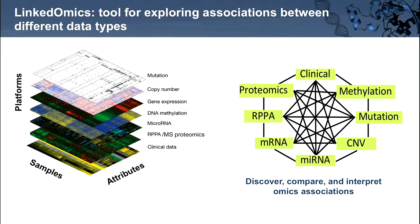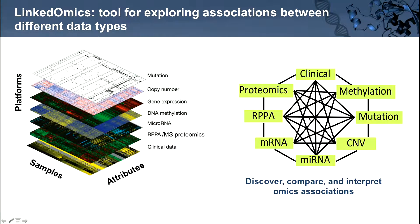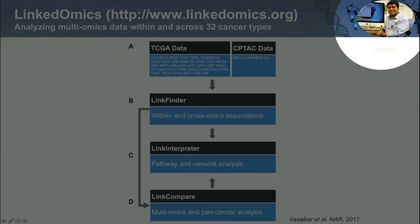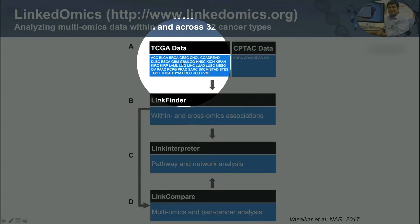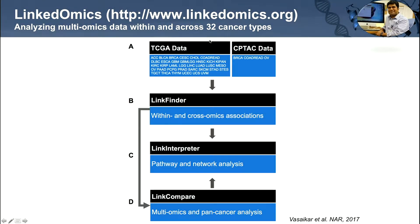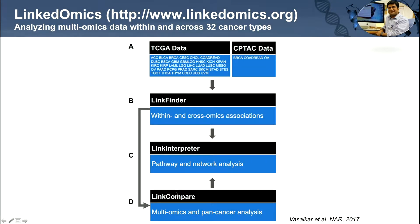LinkedOmics provides a way to carry out pairwise association analyses of all the different types of data in TCGA and LinkedOmics. It was primarily developed by Suhas Vasaker, another research associate in the lab. In addition to collecting omics data sets from TCGA and CPTAC, LinkedOmics contains three modules: LinkFinder, LinkInterpreter, and LinkCompare, that allow you to analyze these data sets.